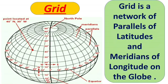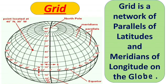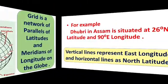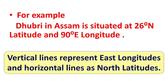Next, let's talk about the grid. The grid is the network of parallels of latitude and meridians of longitude on the globe. As you can see in the picture, lines of latitude and lines of longitude intersect each other, forming a network — and that is the grid. You can locate any point on the globe very easily if you know its latitude and longitude.